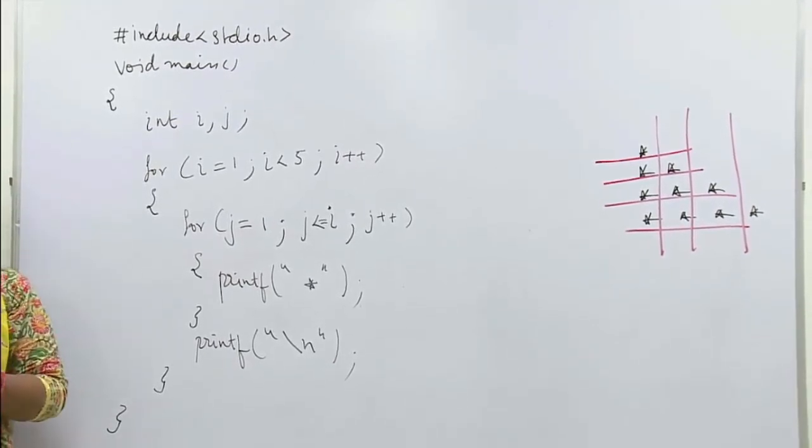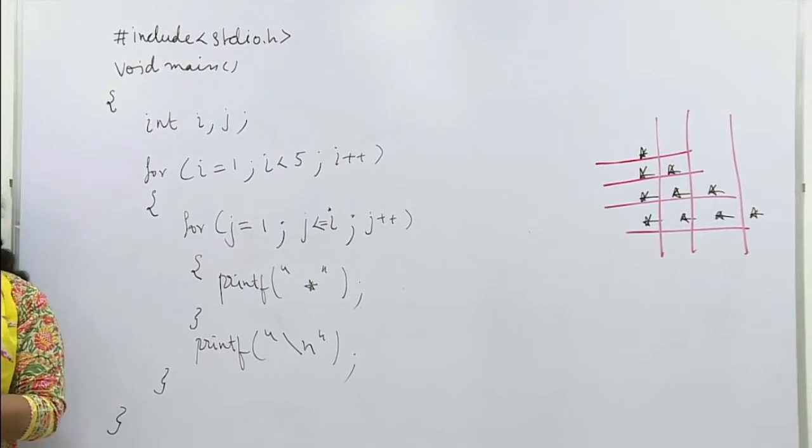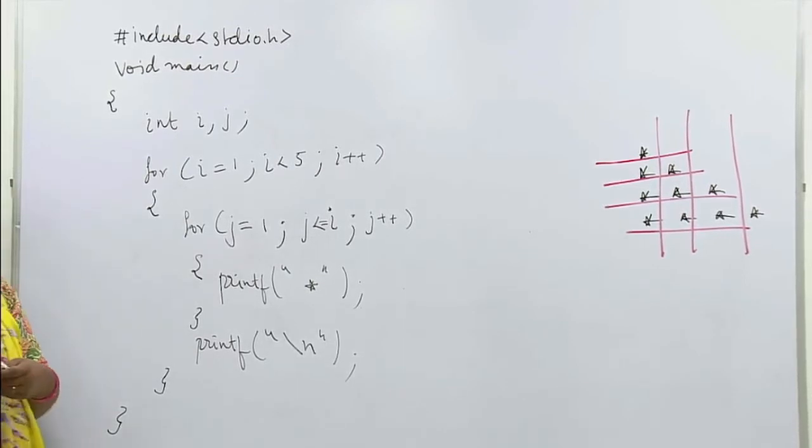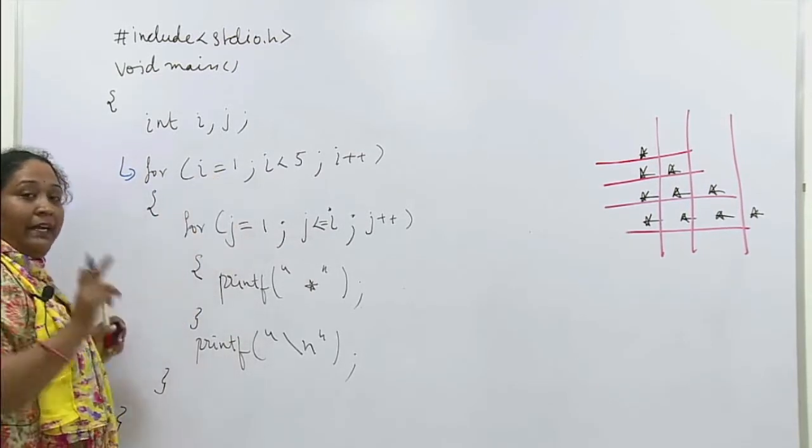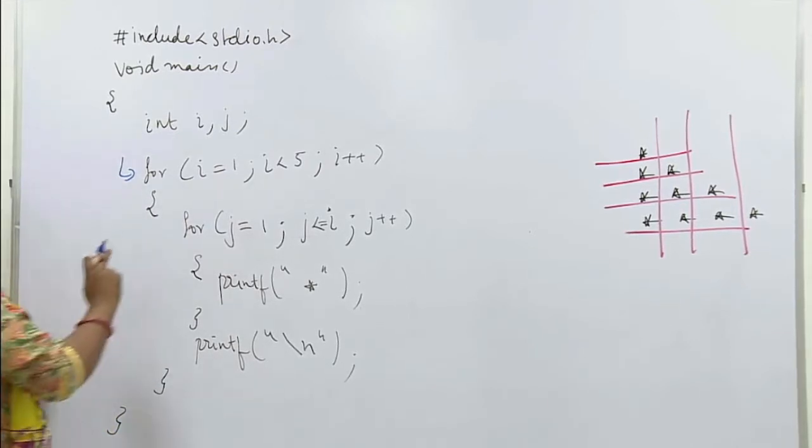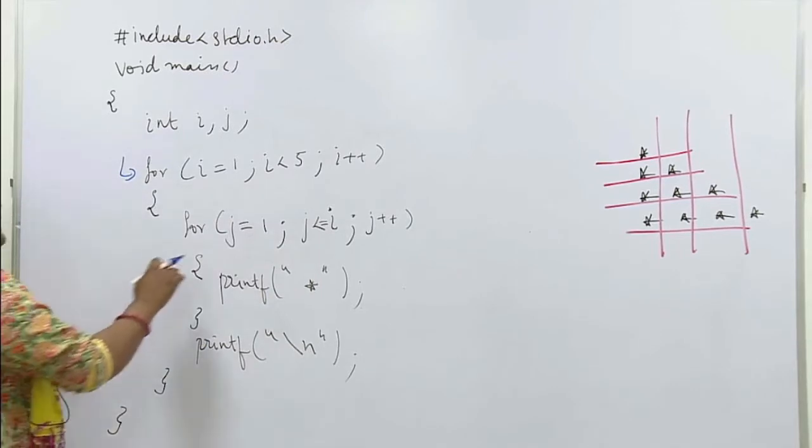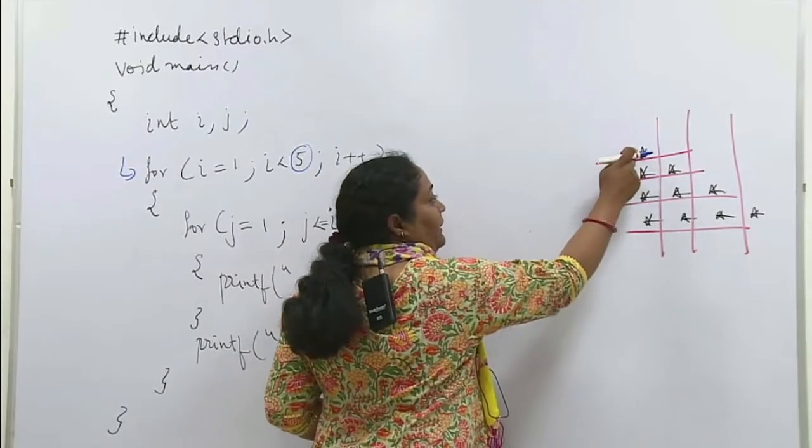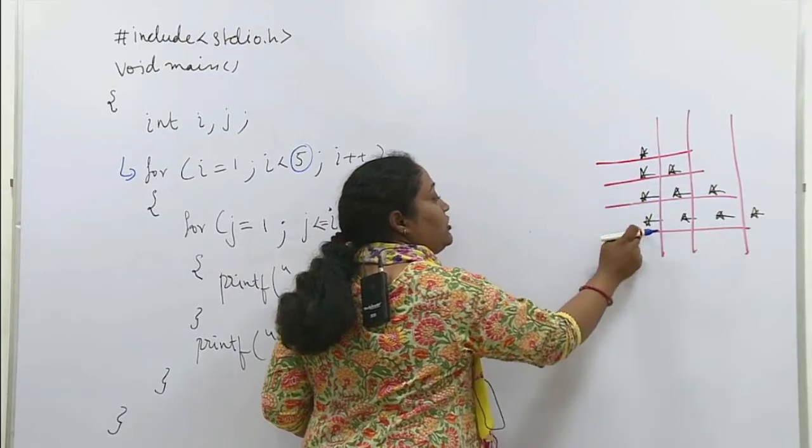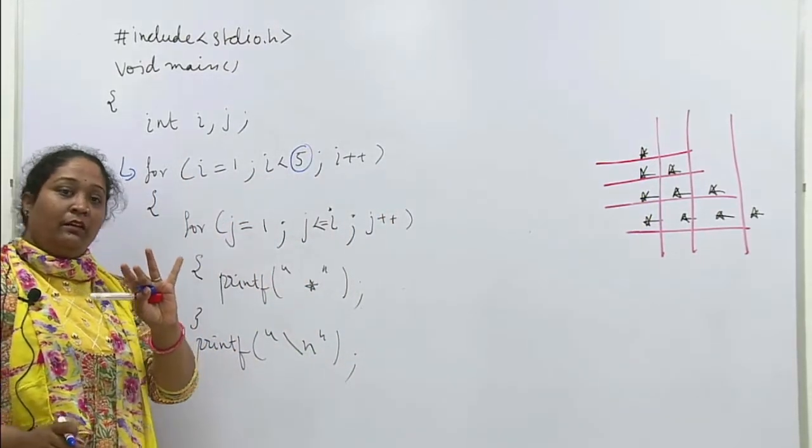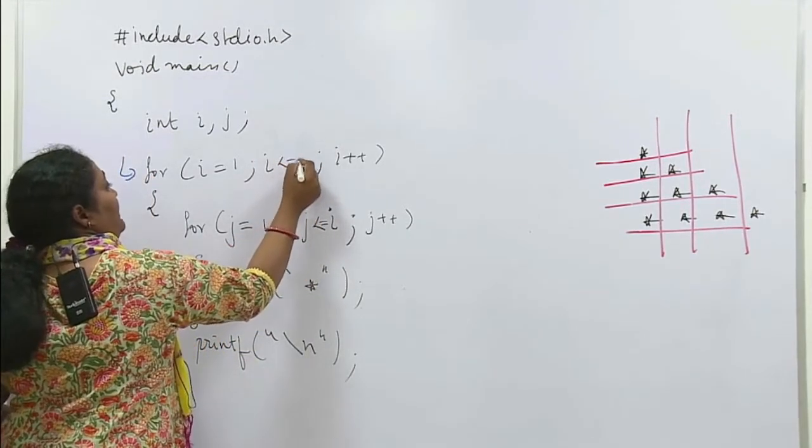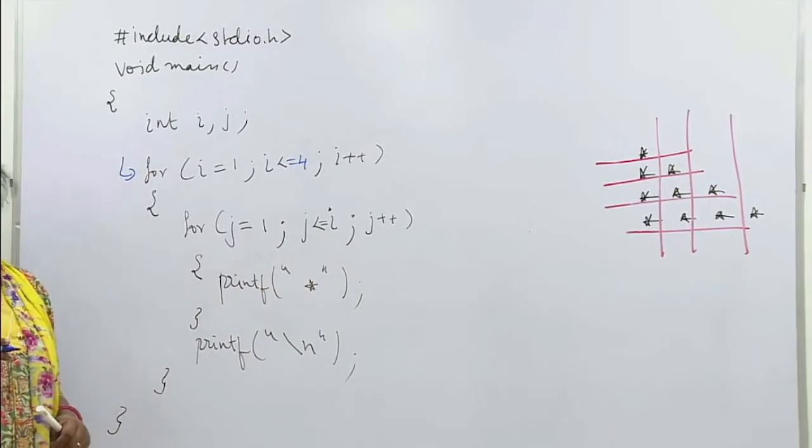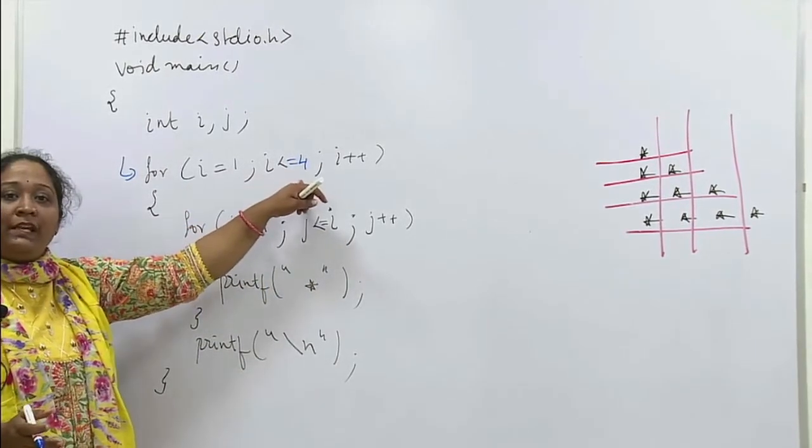Thik hai? Ab iska output dekhte hain ki ye kis prakar se execute karega. Haan dhyaan se samjhiye ga ki nested for loop kis prakar kaam karta hai. Sabse pehle, yahan se kya hua, enter hua. Enter hoke hum kahan pohunche, yahan pe. i ka maan kitna ho gaya mere paas mein? One. i ka maan one hai, aur one five se chhota hai. Ye 5 kyun liyaan maine? Ye 5 liyaan maine isko control karne ke liye. Kitni lines ayi hain? Ek, do, teen, char. Less than 5 ka matlab kya ho gaya? 4 hi ho gaya.